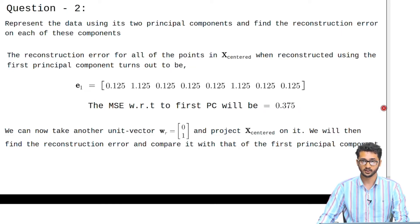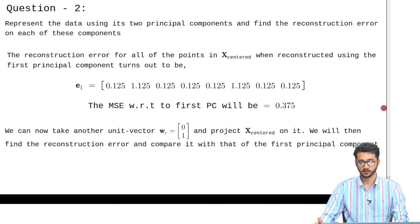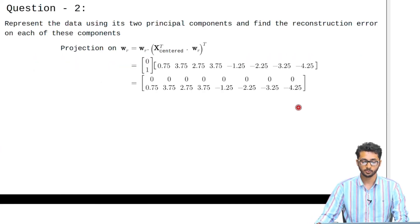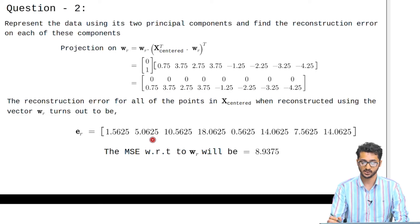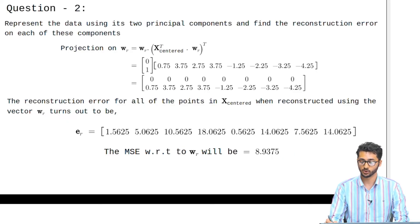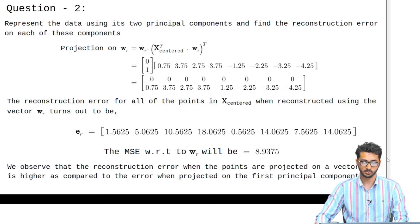We will now take another vector w_r = (0, 1), which is along the y-axis, and project x_centered on it to calculate the errors. Clearly the least error is when the points are projected on the first principal component, so the error here will be more. On projecting the points on w_r, the mean squared error turns out to be 8.9375, which is much more than what we found for the first principal component.